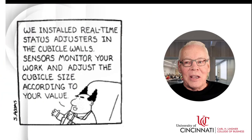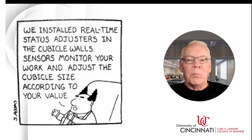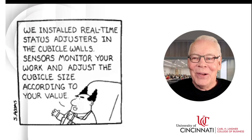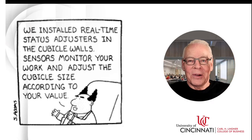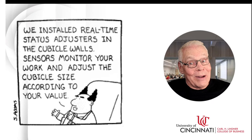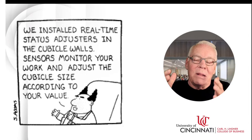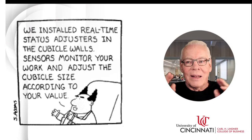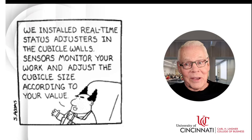Here's a tongue-in-cheek example — a cartoon that says: 'We installed real-time status adjusters in the cubicle walls; sensors monitor your work and adjust the cubicle size according to your value.' Wouldn't that be funny? The less valuable you are at work, the walls seem to shrink; the more valuable, the walls get bigger. It's a joke of course, but you look at offices and the boss always had the bigger office. This satirizes that whole idea with an adjustable version. This doesn't really exist — at least I hope not.